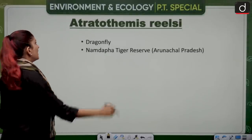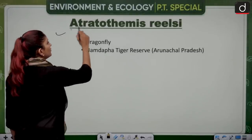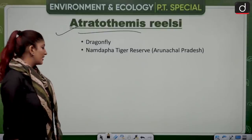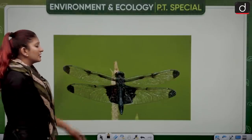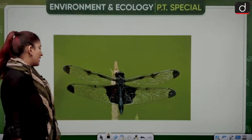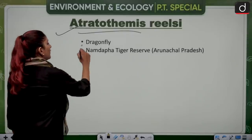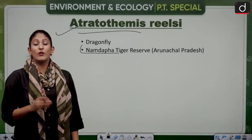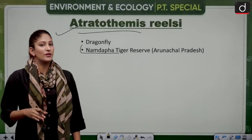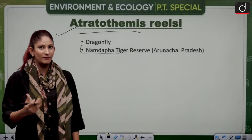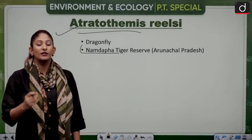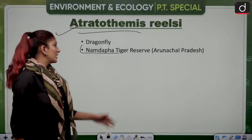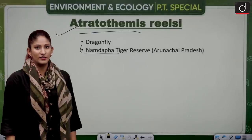Atrathothemes reelsei is a dragonfly found in the Namdapha Tiger Reserve, which is on the international border of India and Myanmar. The only ape in India, the Hoolock gibbon, is also found in Namdapha Tiger Reserve.